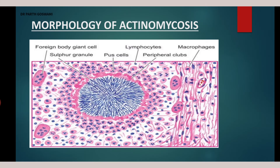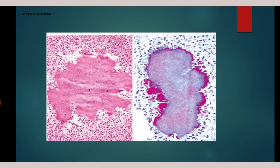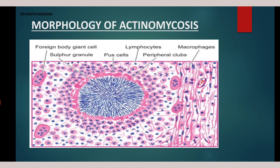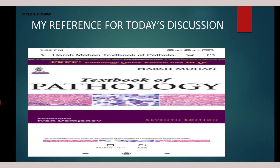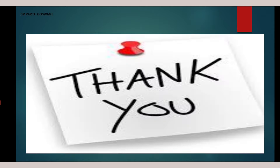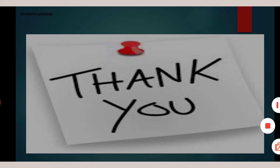To summarize the morphology of actinomycosis in one minute: centrally you have acute inflammatory cells and a bacterial colony showing radiating filaments; surrounding that are lymphocytes and plasma cells along with giant cells (modified macrophages — multinucleated cells); and the peripheral coat is formed by fibrosis. That is the actinomycosis infection. Thank you very much — if you liked the video, please like, share, and subscribe. Post queries in the comment section. I will try to make more videos on pathology.